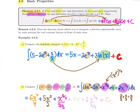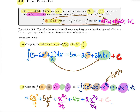For 2x^(−1/4): minus 1/4 plus 1 equals 3/4, so we get 2x^(3/4) divided by 3/4. Don't forget to sign your work with a plus c at the end — and that's the family of primitives, the result of integrating the function.